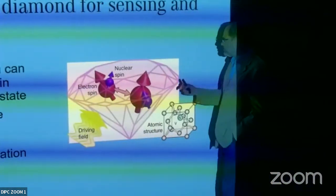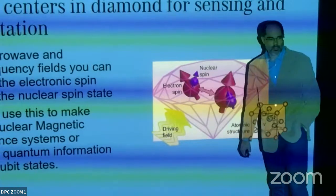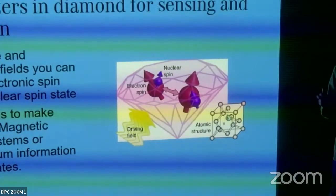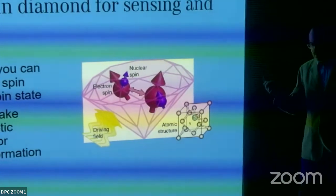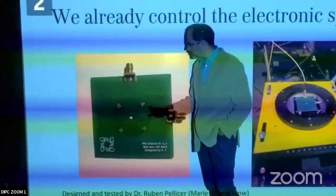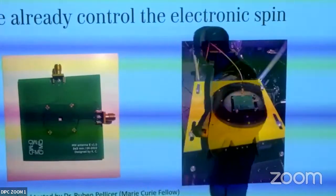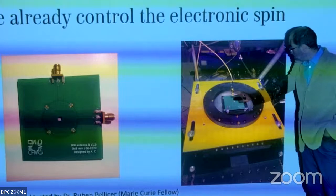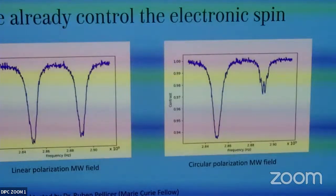The electronic and nuclear spins are coupled and can be controlled independently because their energy scales differ significantly. You should observe hyperfine splitting of the resonances. This is our microwave antenna system, developed by Rubén — the diamond is placed here in a 1 mm × 1 mm region. I'll show you the results.